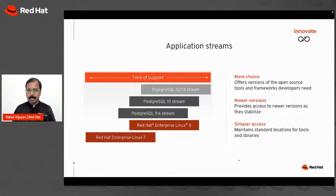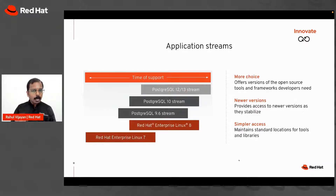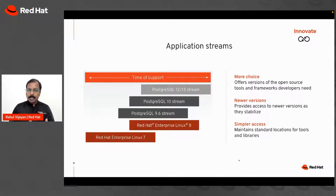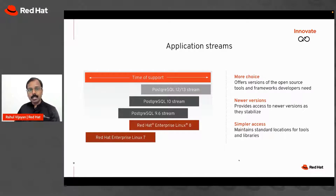We had many innovations in Red Hat Enterprise Linux, but let's use one example: application streams. Application streams help you run multiple different versions of the same applications on Red Hat Enterprise Linux, which means you get more versions of the same applications or frameworks frequently being released.